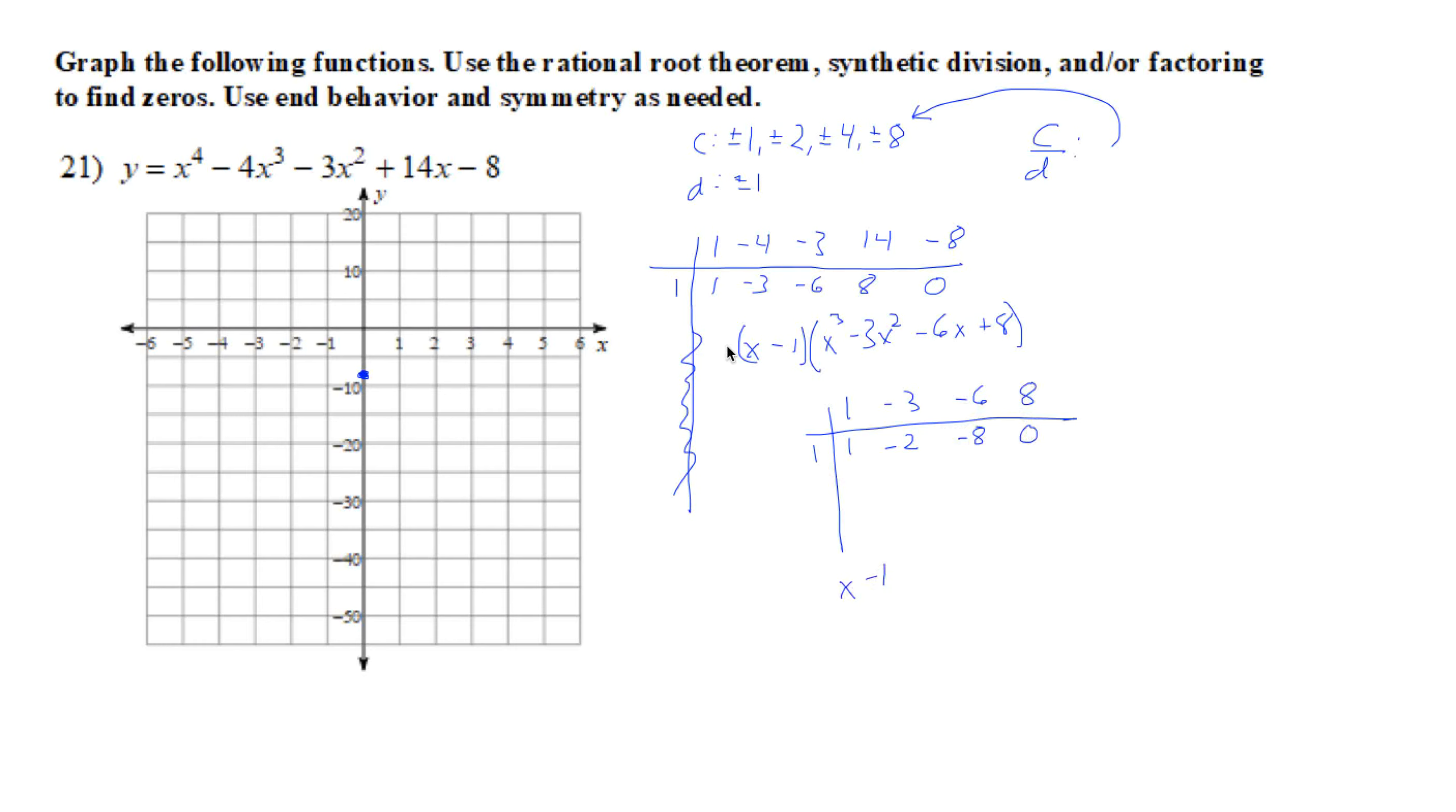1 worked again! So right now we have x minus 1 from up here, we now have, because of this one, we have another x minus 1, and we were at a cubed divided by an x, now we're x squared minus 2x minus 8. We can keep factoring, well, we can write this as x minus 1 squared because there's two of them.